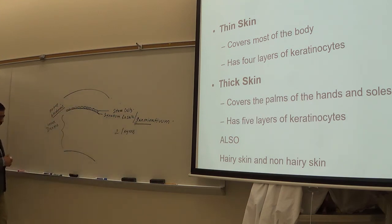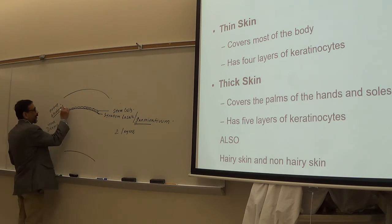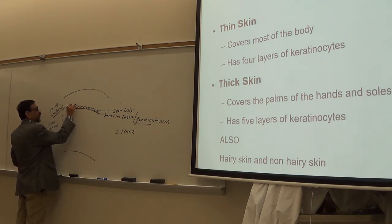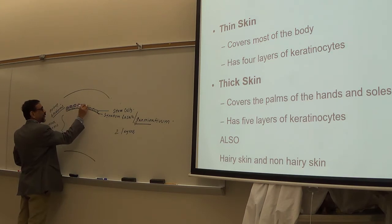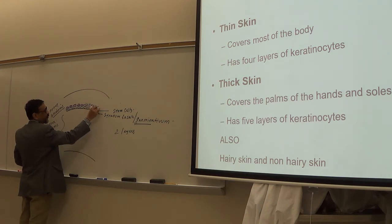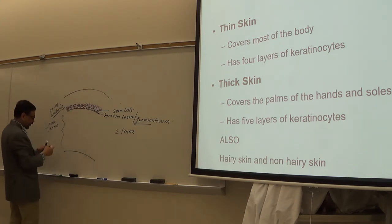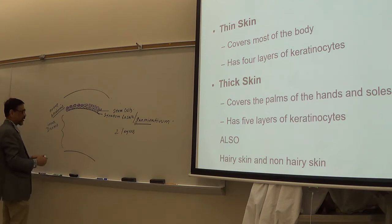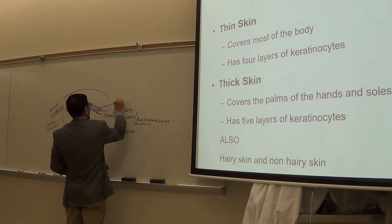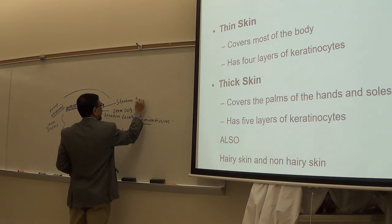The next layer — if you look at these cells, they have many spines or spikes. This layer is called stratum spinosum. The cells have spine-like or spike-like structures.